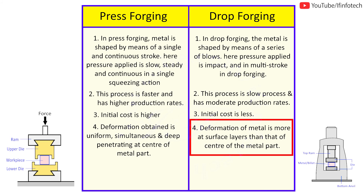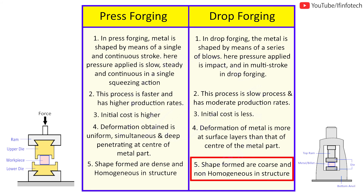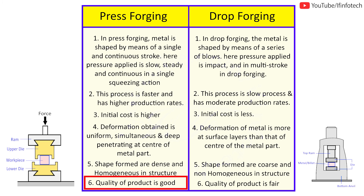In press forging, the shapes formed are dense and homogeneous in structure, whereas in drop forging, the shapes formed are coarse and not homogeneous in structure.